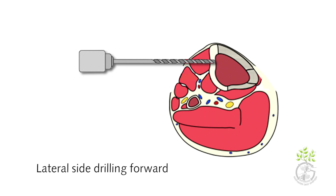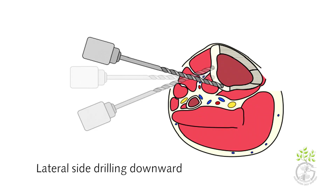A small one centimeter incision is made over the anterolateral aspect of the proximal tibia, and using an elevator the periosteum is elevated. A small diameter 3.2 millimeter drill bit is introduced, performing drilling in forward, upward, and downward directions. It is important that the surgeon not approach the medullary canal, as we aim to preserve the medullary vessels.